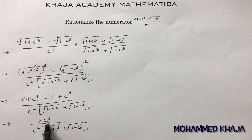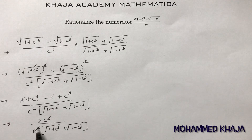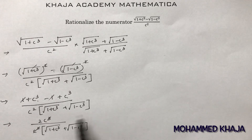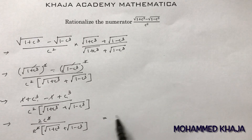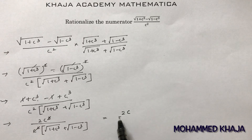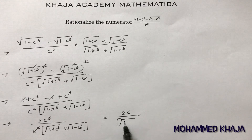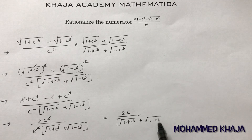Now we simplify c³ divided by c². We have c to the power 3 in the numerator and c² in the denominator, so c² cancels, leaving c to the power 1. The result is 2c divided by (root(1 + c³) plus root(1 - c³)).